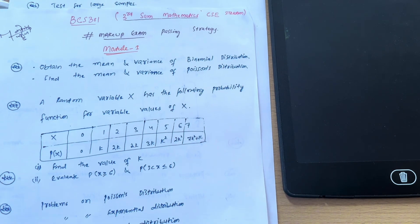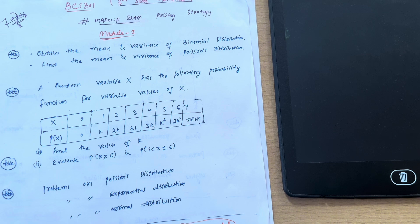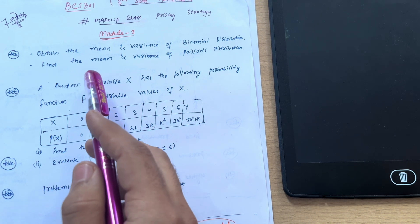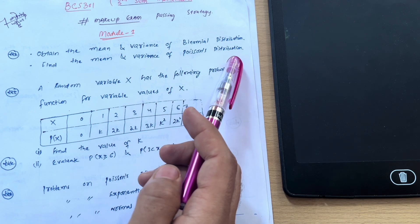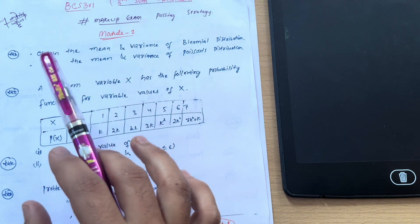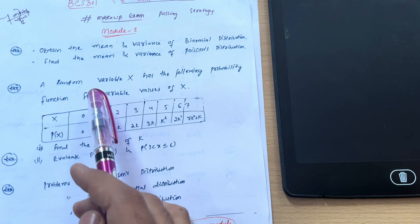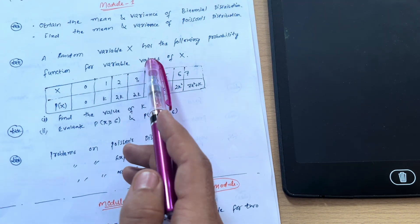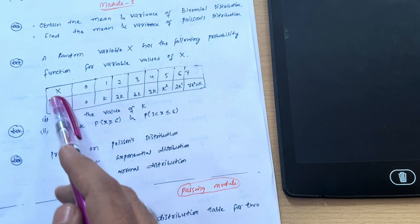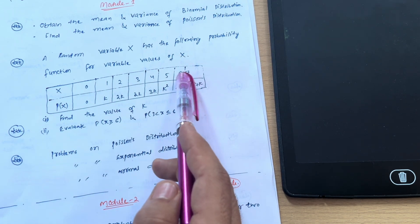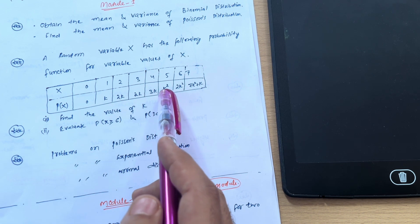Let us discuss Module 1 first, in which some super important questions are there, like obtain the mean and variance of binomial distribution, find the mean and variance of Poisson's distribution. This is a definite question—among these two, definitely one VTU will ask in the examination. Next we have a simple variety: a random variable X has the following probability function for variable values of X.